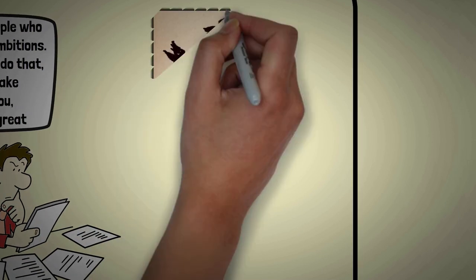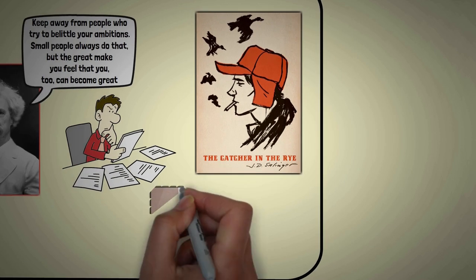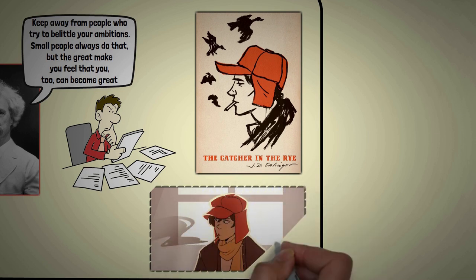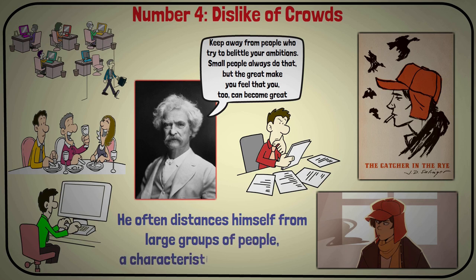An example is Holden Caulfield from J.B. Salinger's novel, The Catcher in the Rye. Holden describes himself as an outsider and constantly tries to avoid people, particularly those he perceives as phony. He often distances himself from large groups of people, a characteristic of Sigma males.